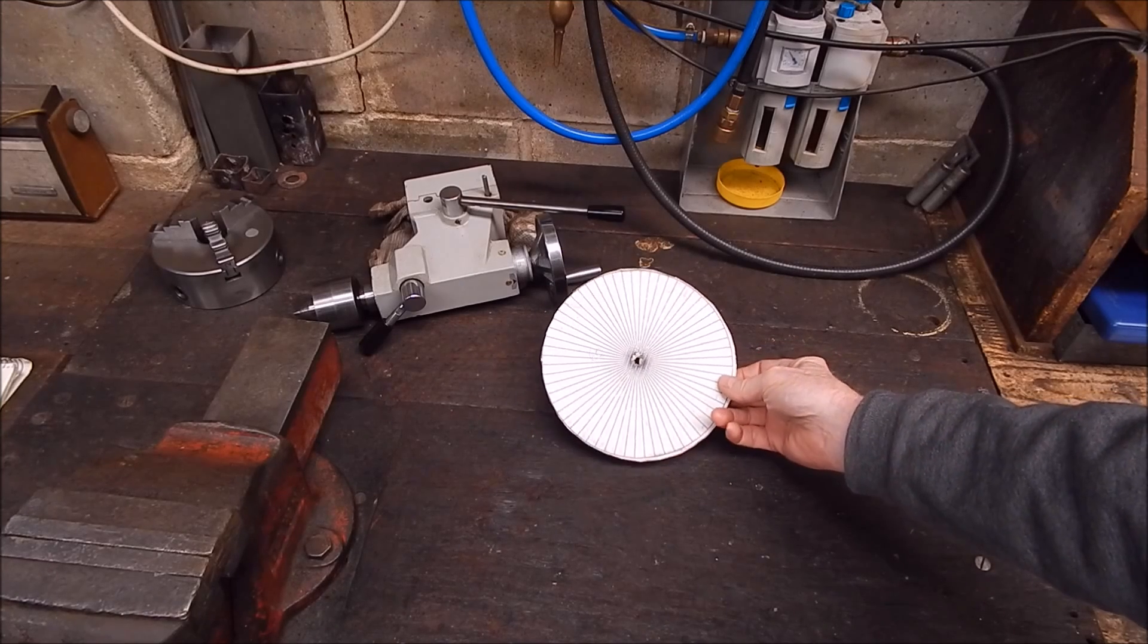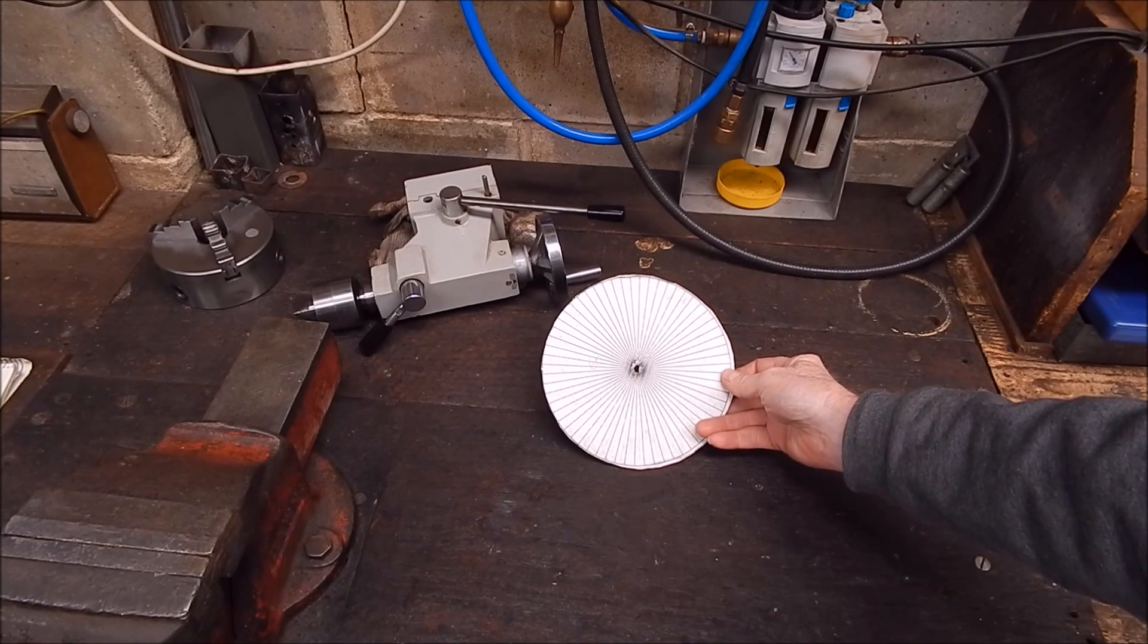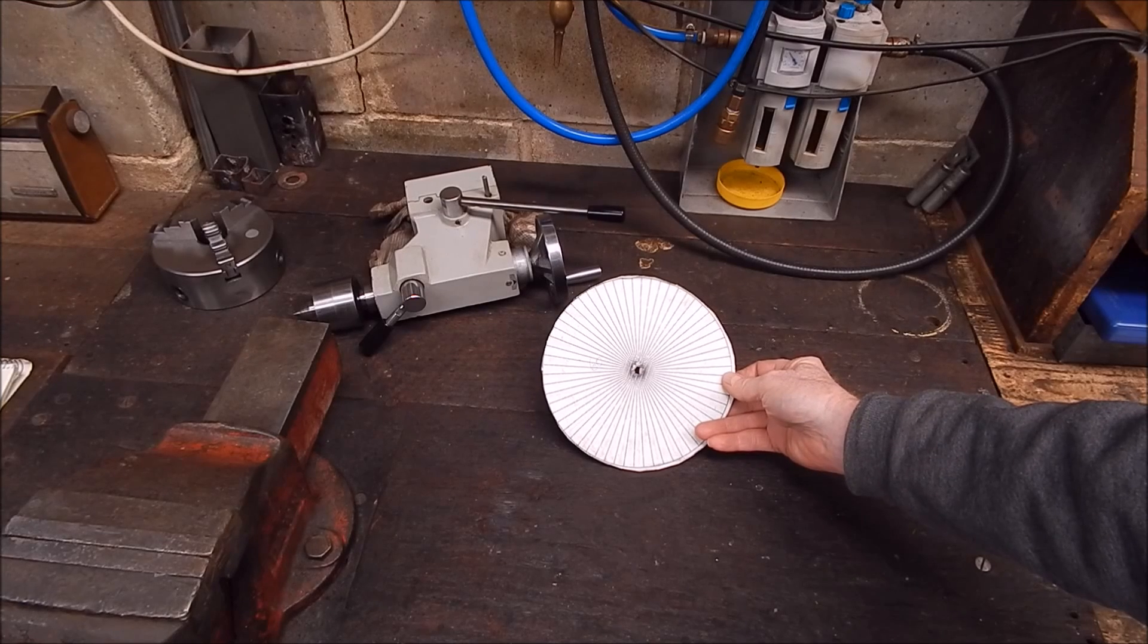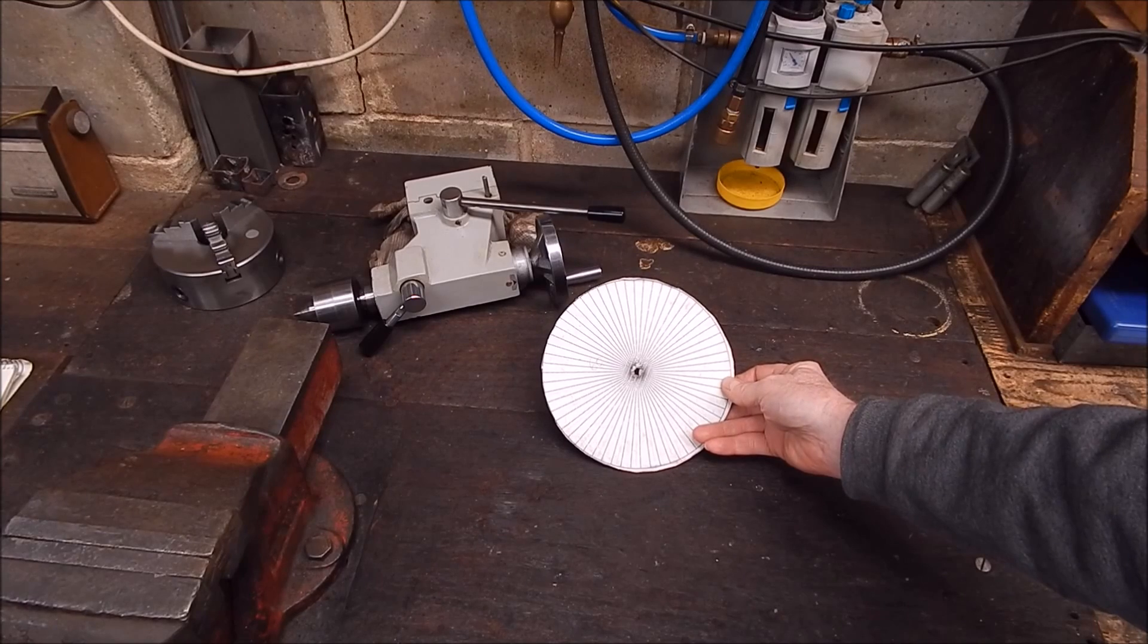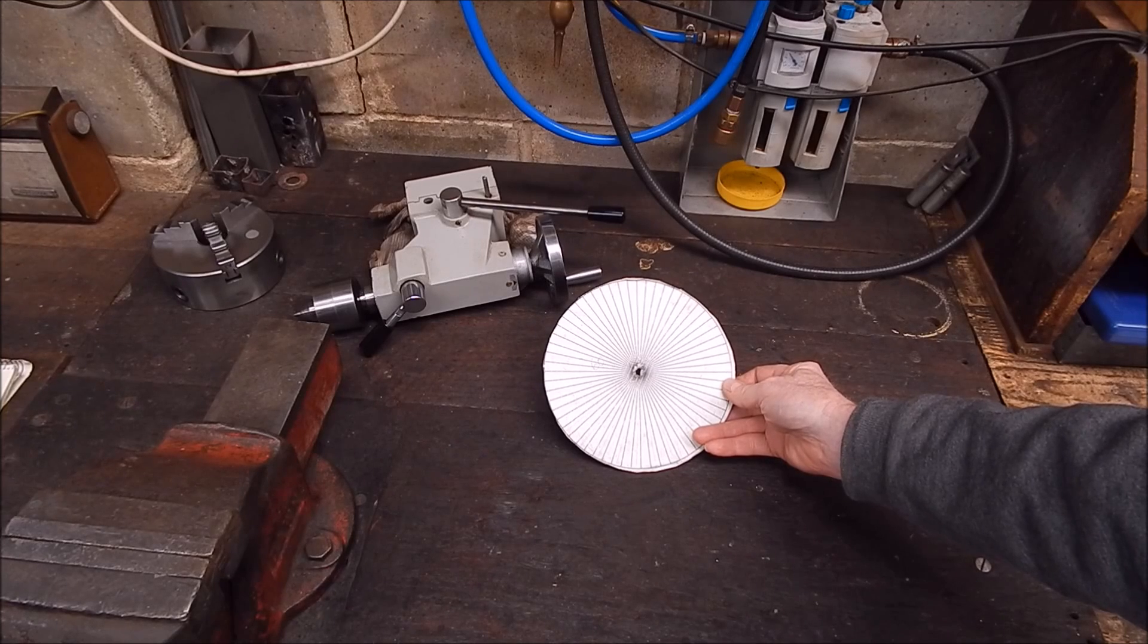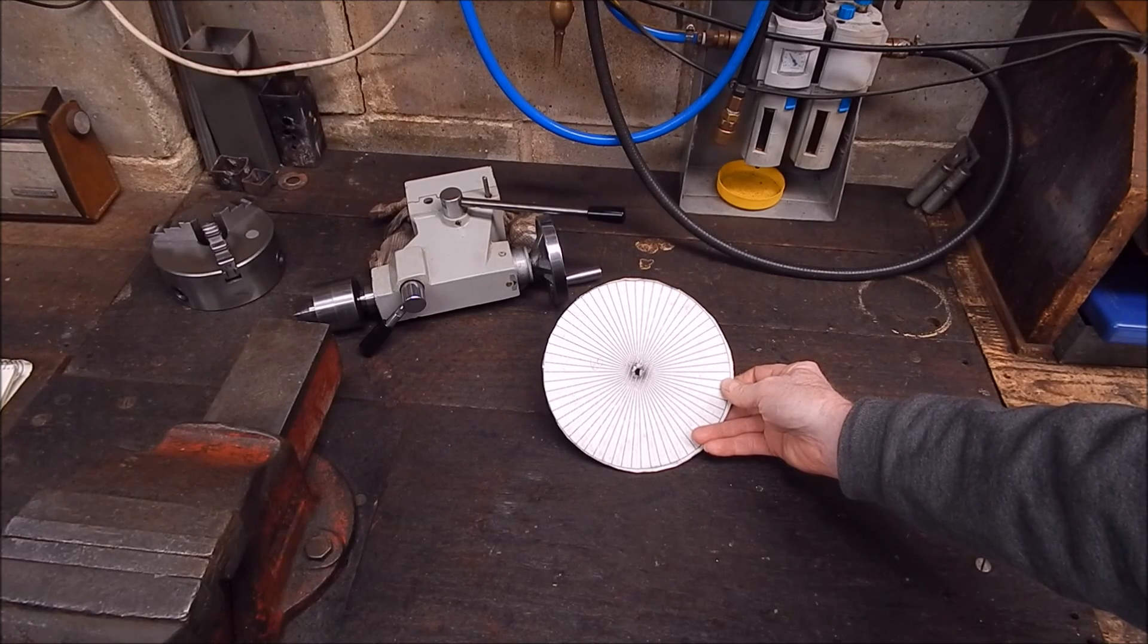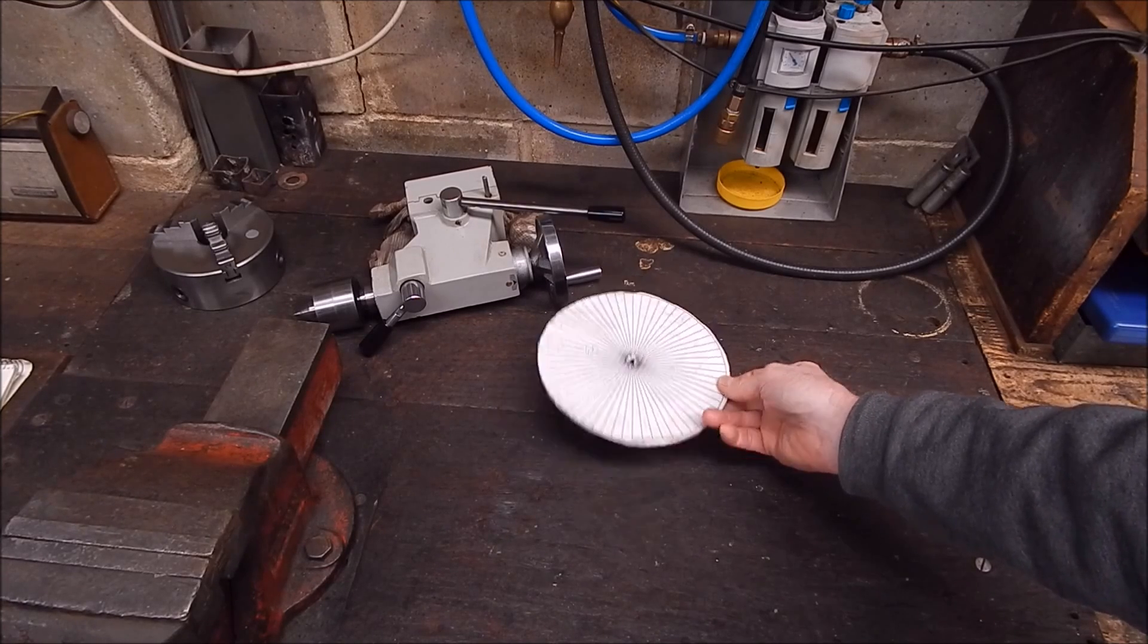Basically it's just a number of teeth for the gear divided into 360 degrees and you put that value in a column of cells the same number as the teeth and it prints out the pie chart.